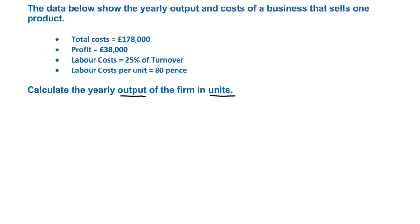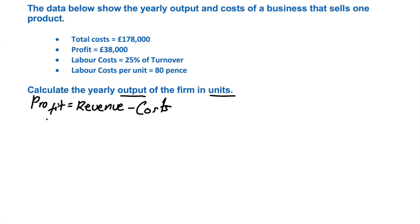The first thing we've got is the total costs and the profit. So we need to firstly quickly calculate the revenue. We do the same old formula: profit equals revenue minus costs. And if we just flip that formula around, it's obviously revenue equals costs plus profit.